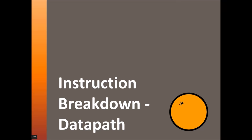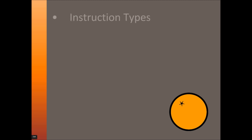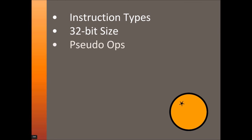Welcome to the Progressive Learning Platform Instruction Breakdown and Datapath Tutorial. In this tutorial, we will show you the different types of instructions and break them down to see why they are different. We will discuss the 32-bit size that all instructions share, look at what a pseudo-operation is, and follow a handful of instructions through the processor's datapath.